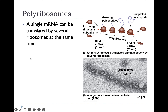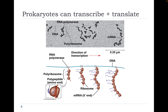We can also have polyribosomes: a single mRNA translated by several different ribosomes at the same time — like multiple kitchens sharing the same recipe, like a fast food chain. Prokaryotes can also transcribe and translate at the same time. Because prokaryotic DNA isn't locked inside a nucleus, transcription of the mRNA can happen as that same mRNA molecule is being translated, making the process very efficient.